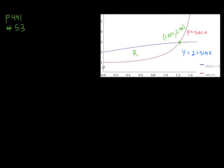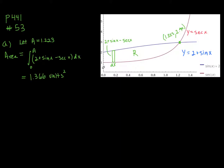First I want to find the area of this region R. I think about the heights of the approximating rectangles and multiply them by the widths dx to get infinitesimally small areas, adding them from 0 to 1.223. The height is the vertical distance between 2 plus sine x and secant x — since 2 plus sine x is above secant x, it will be 2 plus sine x minus secant x. Setting A as the x-coordinate where the curves intersect, the integral from 0 to A gives 1.366 square units.